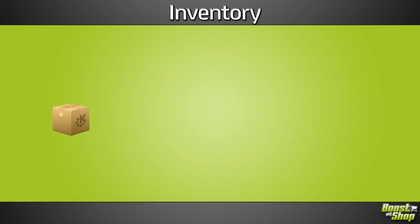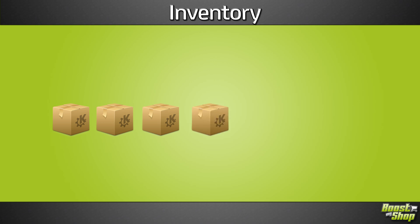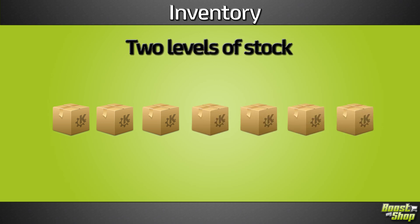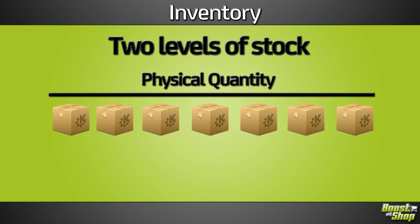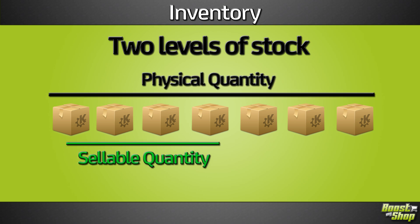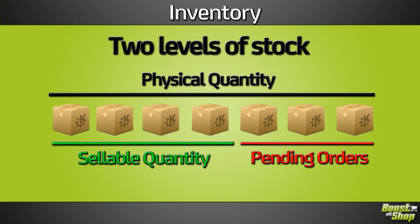Also, to get a clear picture of your stock levels, ERP maintains for each product two levels of stock: the physical quantity in the warehouse and the sellable quantity. The sellable quantity is equal to the stock in the warehouse minus the quantity to ship for pending orders.